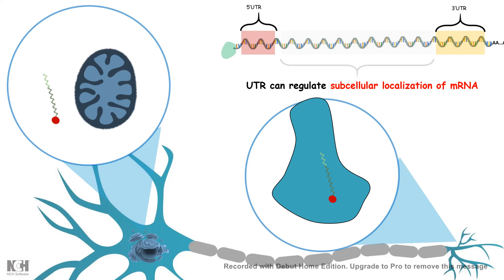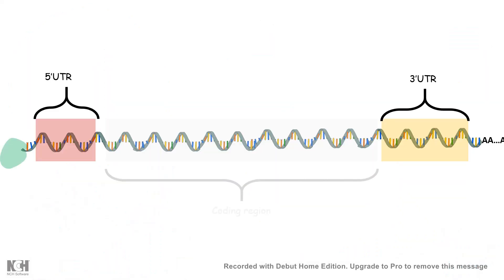Additionally, UTRs can regulate the subcellular localization of mRNA. For example, in a neuron, UTR-binding proteins direct mRNA to specific locations such as synapses or mitochondria, aiding in transport to specific subcellular compartments.